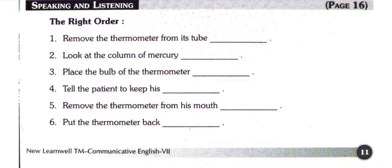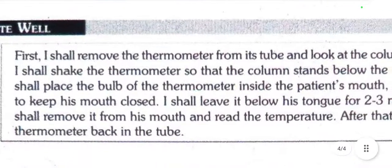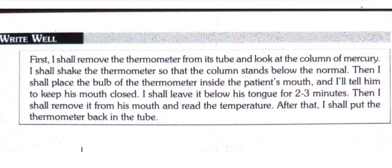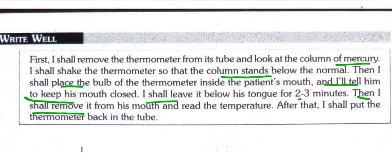Speaking and Listening — put the steps in the right order. You can pause this video and write the answer. First, I shall remove the thermometer from its tube and look at the column of mercury. Then I shall shake the thermometer so that the column stands below normal. I shall place the bulb of the thermometer inside the patient's mouth and tell him to keep his mouth closed. I shall leave it below his tongue for two to three minutes. Then I shall remove it from his mouth and read the temperature. After that, I shall put the thermometer back in the tube.